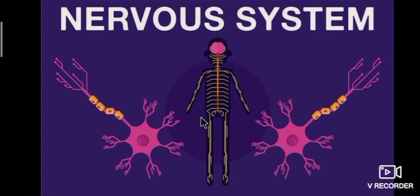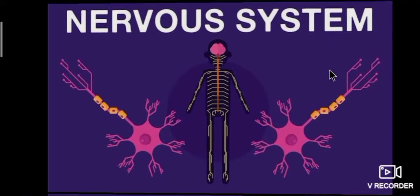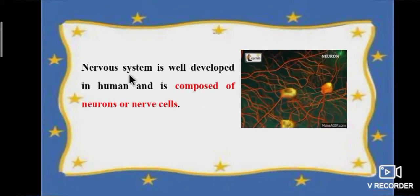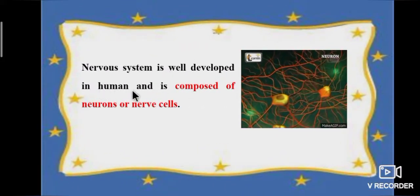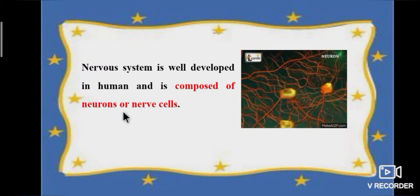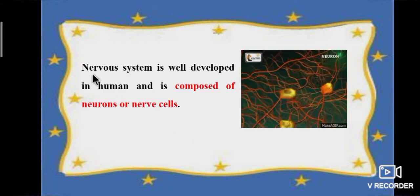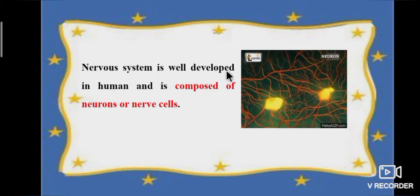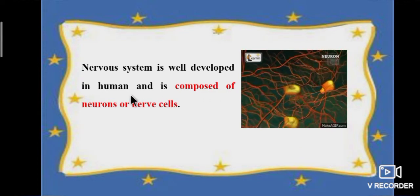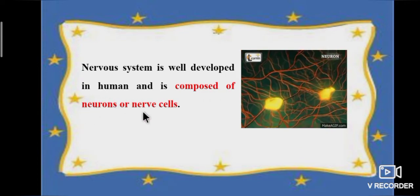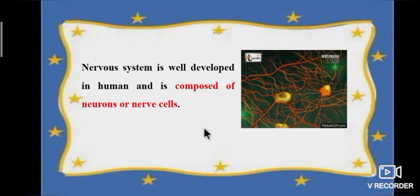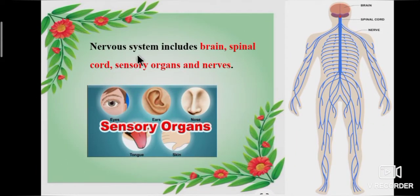Today we are going to study about the nervous system. The nervous system is well developed in humans and is composed of neurons, or nerve cells. The nervous system includes brain, spinal cord, sensory organs and nerves.